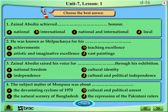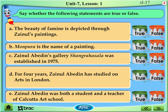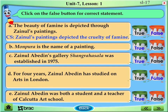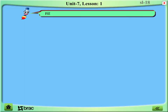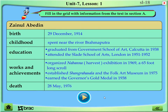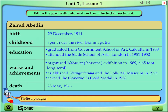Choose the best answer. Say whether the following statements are true or false. Click on the false button for the correct statement. Fill in the grid with information from the text in section A. Write a paragraph on Jainul Abidin with the help of the information from this grid.